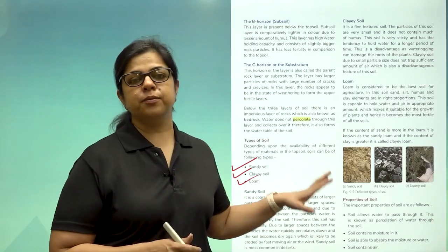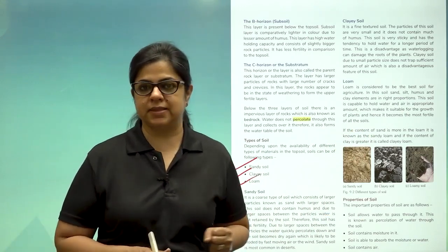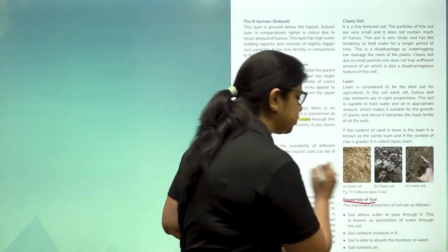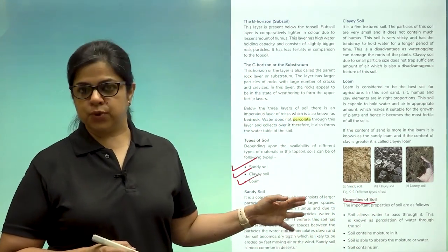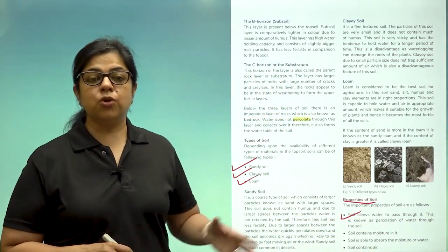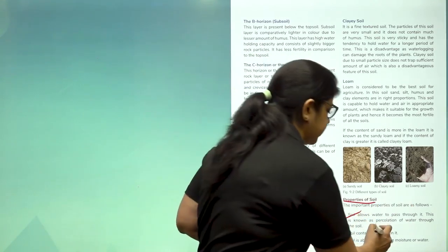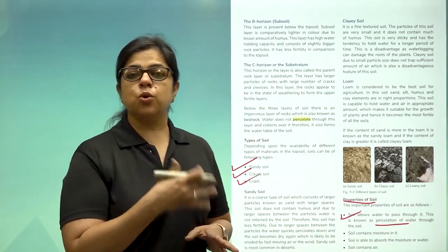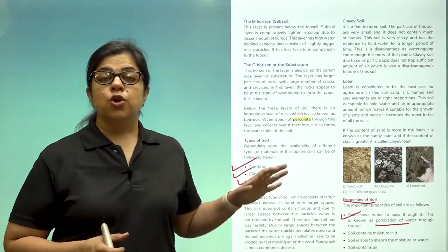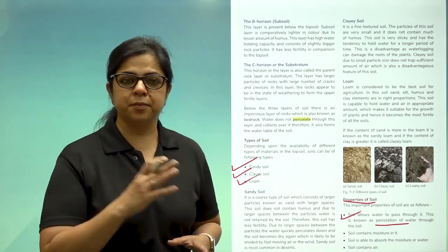So we understand from this video that different soils have got different water holding capacities. So children, that means that soil has got properties of its own. Now what are the different properties of soil? Number one, it will allow water to pass through it. The amount of water that it allows to pass through is called percolation rate. Sandy soil allows all the water to pass through. Clay soil holds the water. Loamy soil holds only the right amount of water required for the plants.